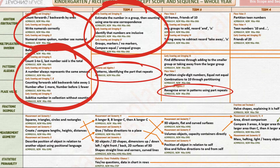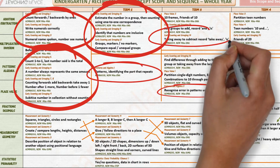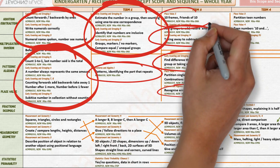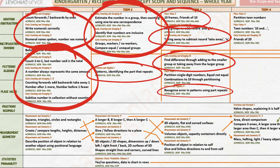In Term 3, students use their understanding of counting and groups to investigate joining groups to add and taking away from a group. They investigate finding difference in two ways, friends of 10, and partitioning single digit numbers.